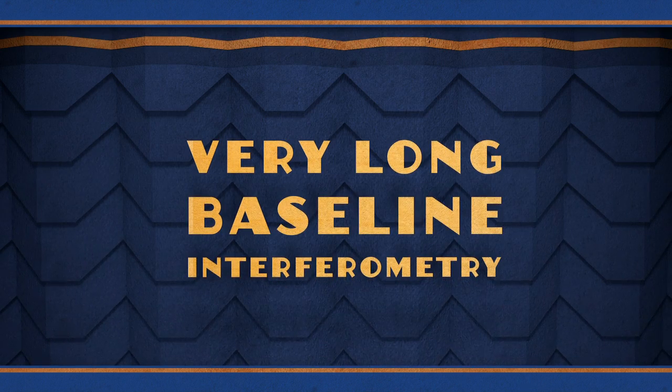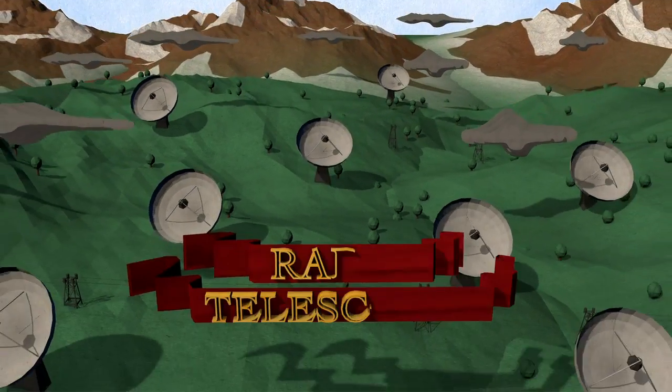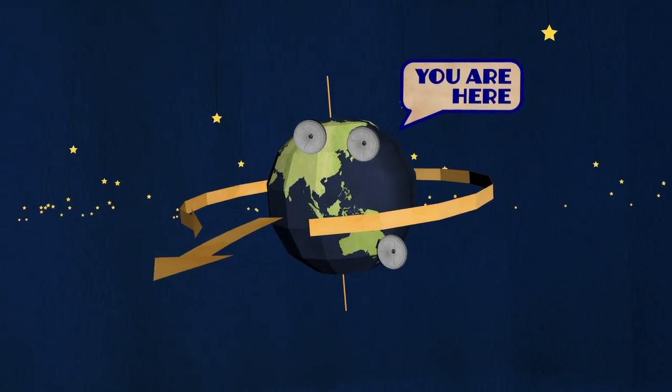Scientists know all this by using a technique called Very Long Baseline Interferometry, which is basically a fancy term for using radio dishes to very precisely measure the Earth's orientation.